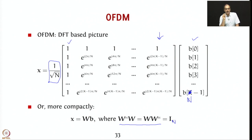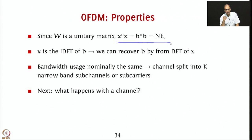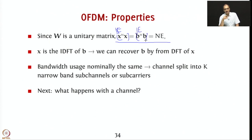In other words, if the budget for your signal power is E_s at the transmitter, then X, obtained by multiplying B by this W, will also use the same amount of energy per symbol. Since W is a unitary matrix, we showed that X Hermitian × X equals B Hermitian × B in expectation, which equals N·E_s. Of course, if you use QPSK this holds directly, but for QAM-16 you will need to take expectation.